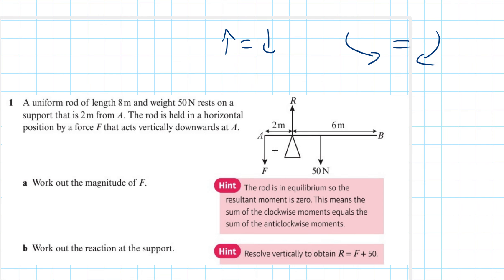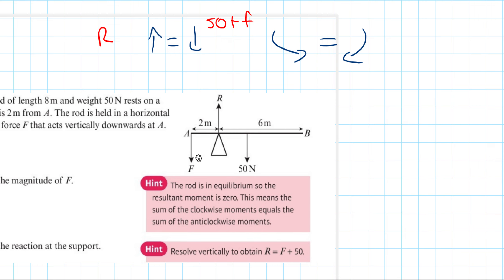Setting up the vertical force equation: R equals 50 plus F. To find F, we need to take moments. Taking moments from the support R eliminates R from the equation — and taking from elsewhere would leave two unknowns. So we take moments from R.